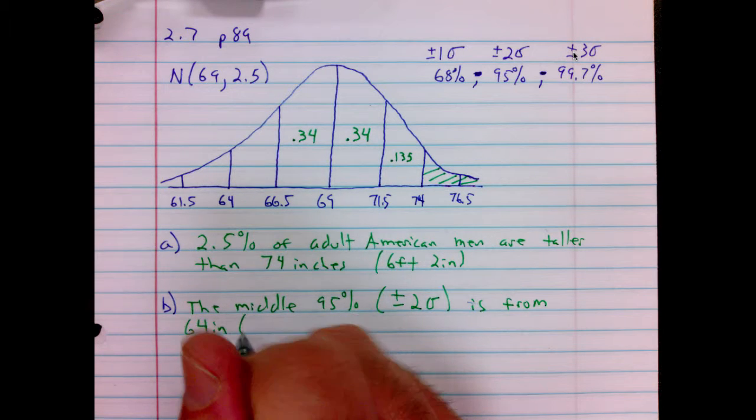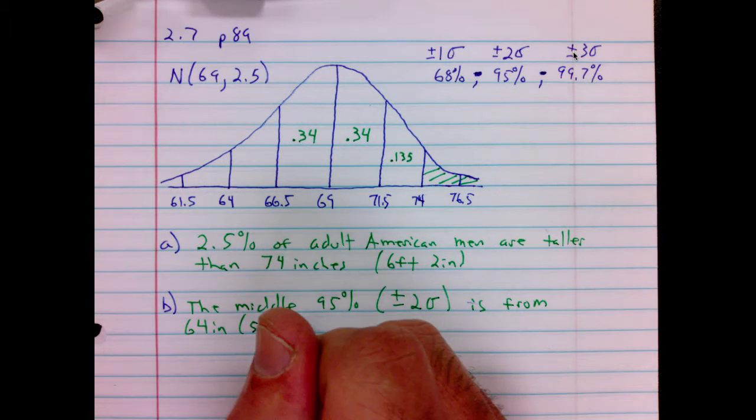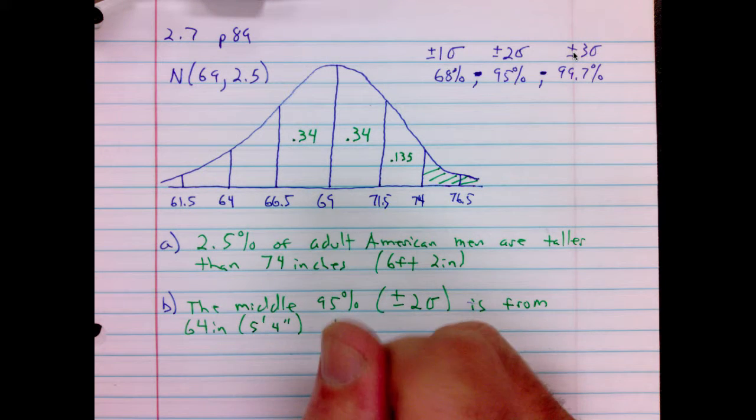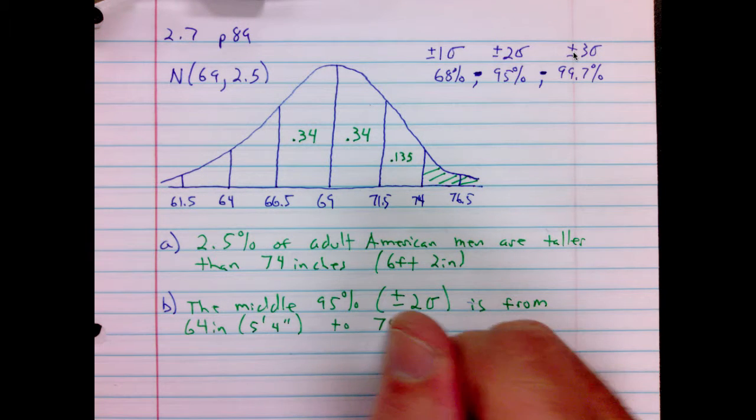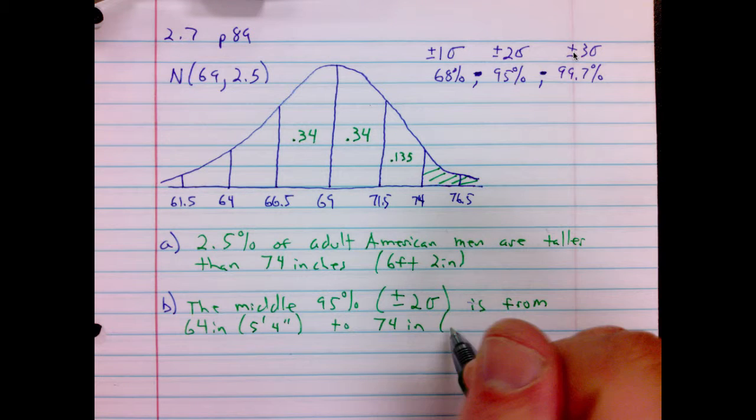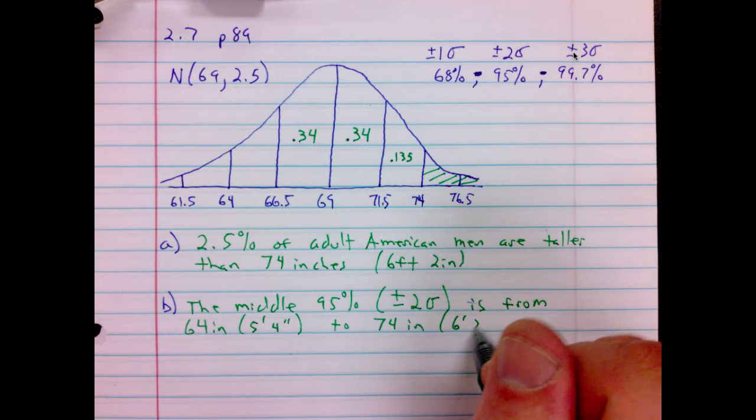The middle 95%, that's plus and minus two standard deviations, is from 64 inches, which is 5 foot 4 inches, to 74 inches, and that is 6 foot 2 inches.